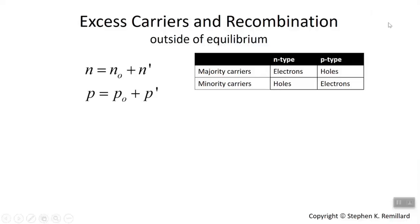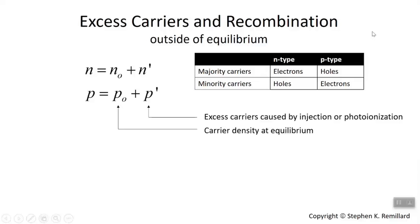So this is what the carrier concentrations look like, how we're going to write them when there are excess carriers. n₀ and p₀ are the carrier concentrations that you have without any current injection or any photo ionization, what you would calculate from those two most important equations in the book. So the carrier density at equilibrium. And n' and p' are the excess carriers that you get into the semiconductor just by pushing them in from the outside. You can either do that by hooking up wires and running current through it, or by shining a light on it and causing excess ionization. That's our structure for how to write it.